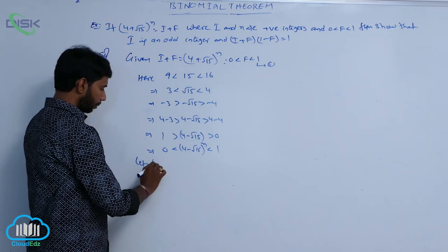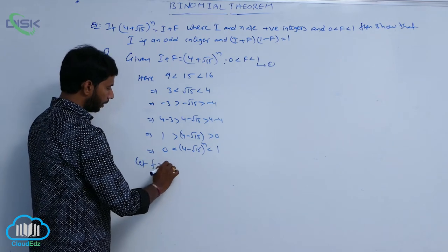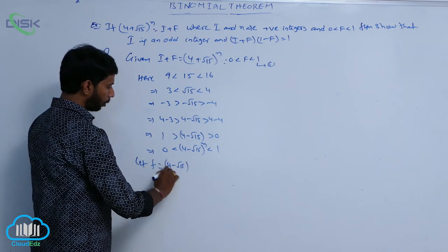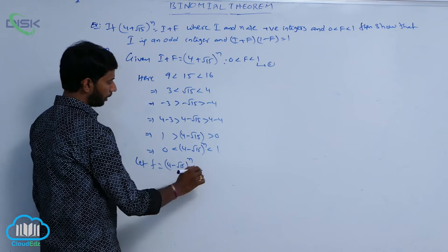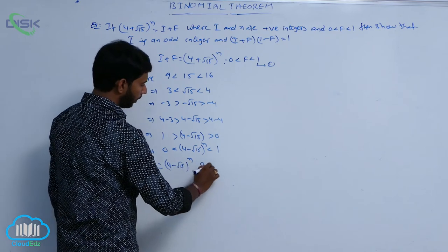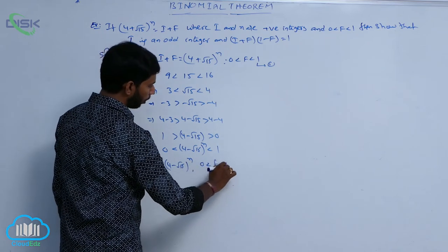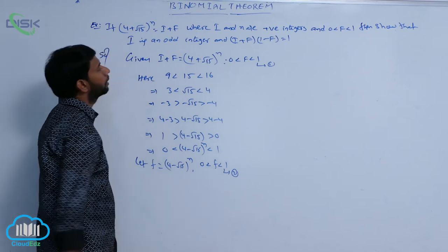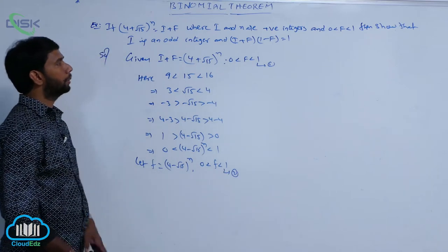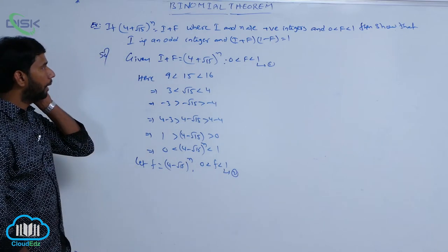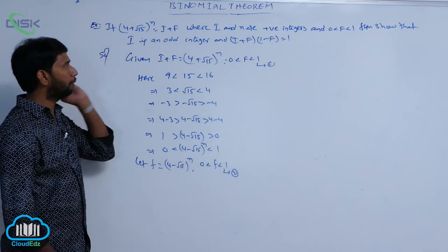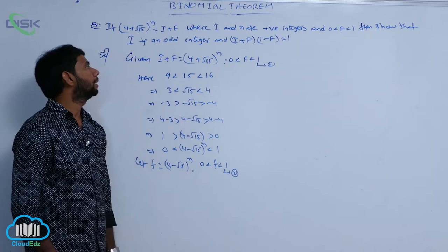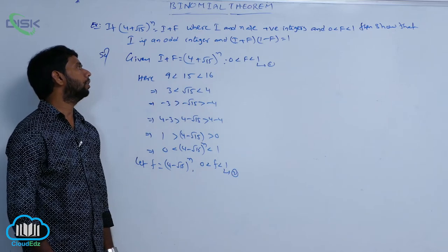Consider that f' = (4 - √15)^n, with 0 < f' < 1. That is condition number 2. Given i + f = (4 + √15)^n, then its conjugate is (4 - √15)^n.